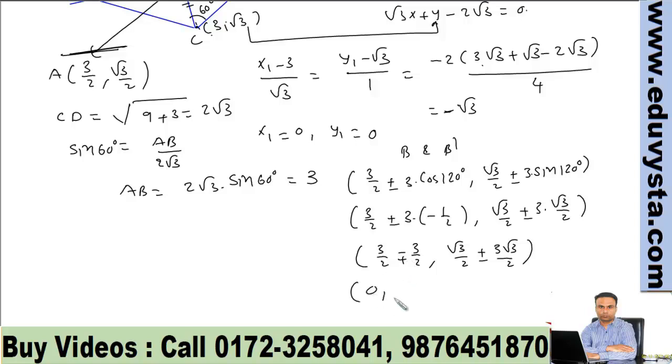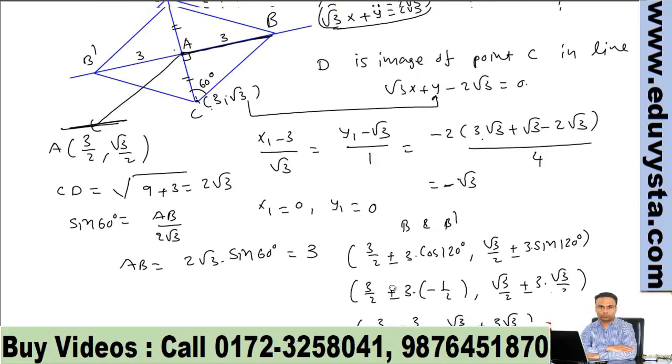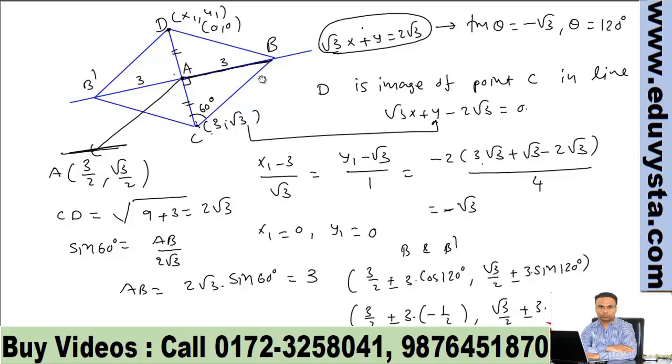So the points are: if we take minus sign, we have 0, then we take plus sign, that is 4√3/2 = 2√3. And if we take plus sign, we have 3, and then we consider minus sign, that is -√3. So we have all the vertices: vertex D and the other two vertices B and B'.